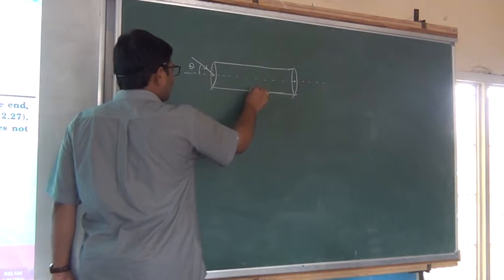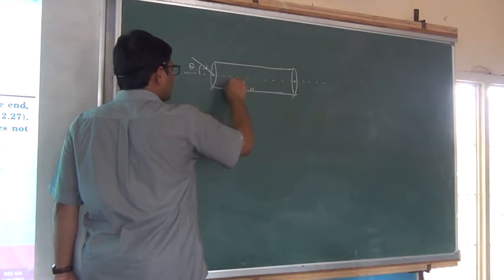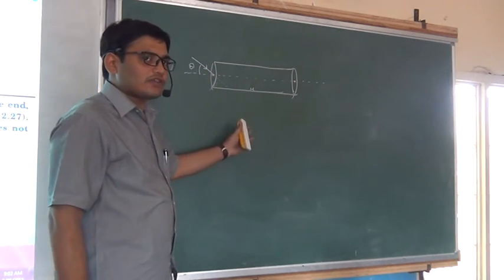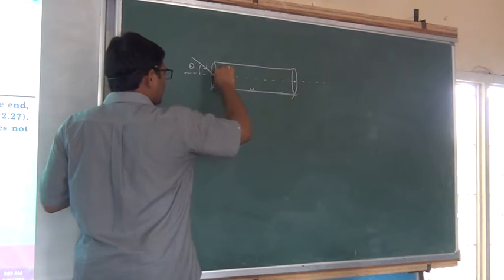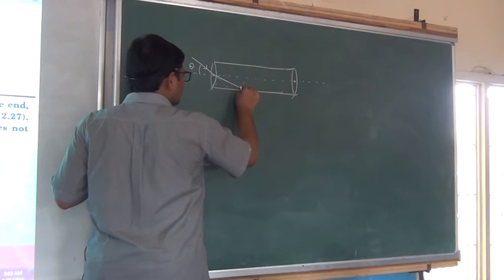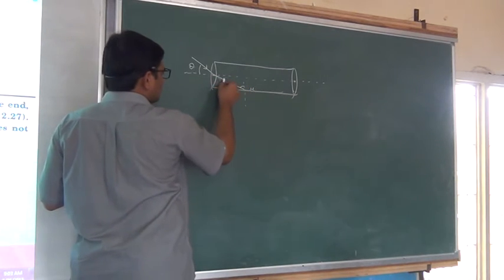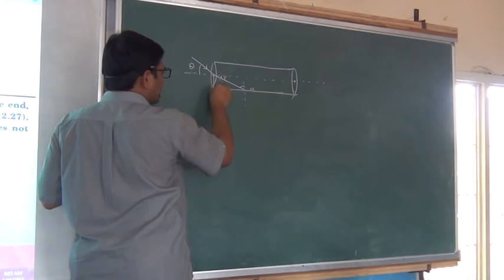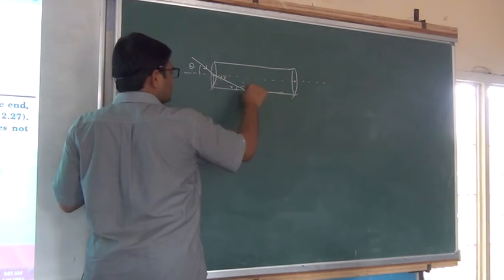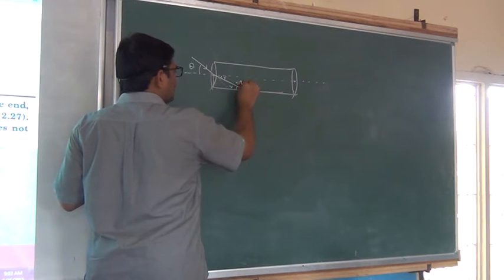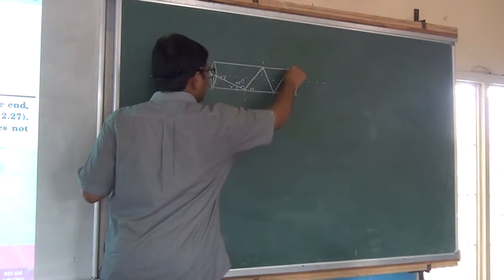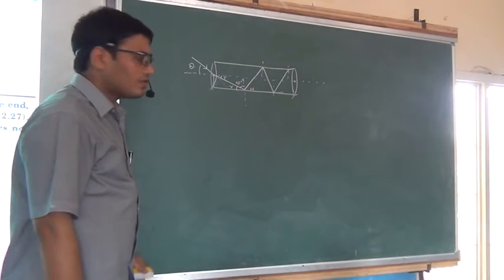Rarer medium to denser medium. The light is supposed to move towards the normal when entering the denser medium. This is the angle of incidence at the flat end, and this is the angle of refraction R. At the curved surface the angle becomes 90 minus R. The condition is that 90 minus R should be greater than or equal to the critical angle, so light keeps getting reflected back and does not come out of the curved surface.